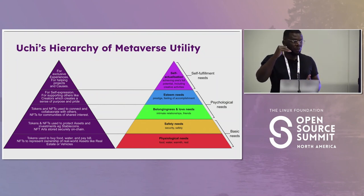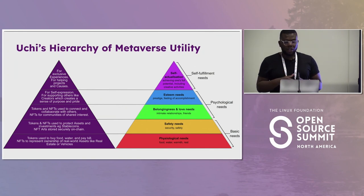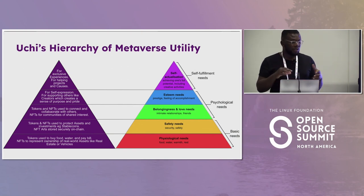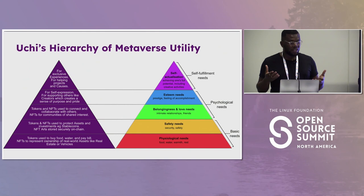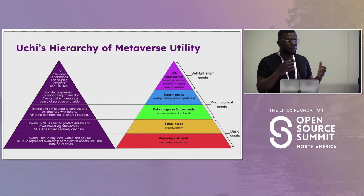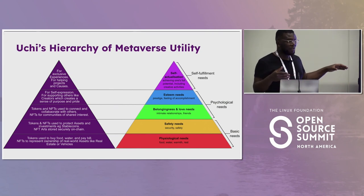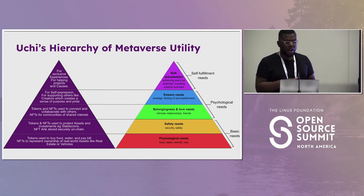Moving up to safety needs, both tokens and NFTs also have the potential to help us meet those. For example, we have stablecoins pegged to the US dollar, which provides a sense of safety or stability since the US dollar is recognized by most countries. For NFTs, they can represent ownership of something very valuable — like artwork or a collectible — which can be securely stored on the blockchain. When tokens and NFTs provide this value, they are meeting the safety needs in Maslow's hierarchy.